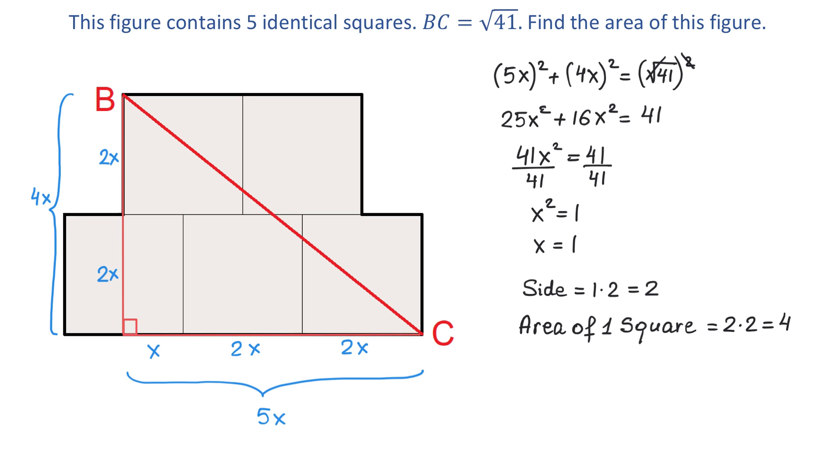Now, the figure has 5 squares and the area of each one is 4 square units. To find the area of the entire figure, we need to multiply 5 by 4. So, the total area is 5 times 4 which makes 20 square units.